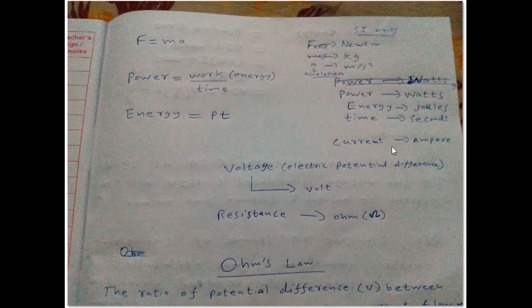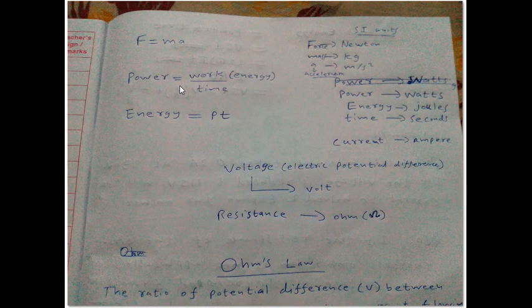Current has SI unit Ampere. Voltage, which is also known as electric potential difference, has SI unit Volt. Resistance has SI unit Ohm. The formula for energy is E = P × T, that is power multiplied by time. These are the basic electricity things you need to know.